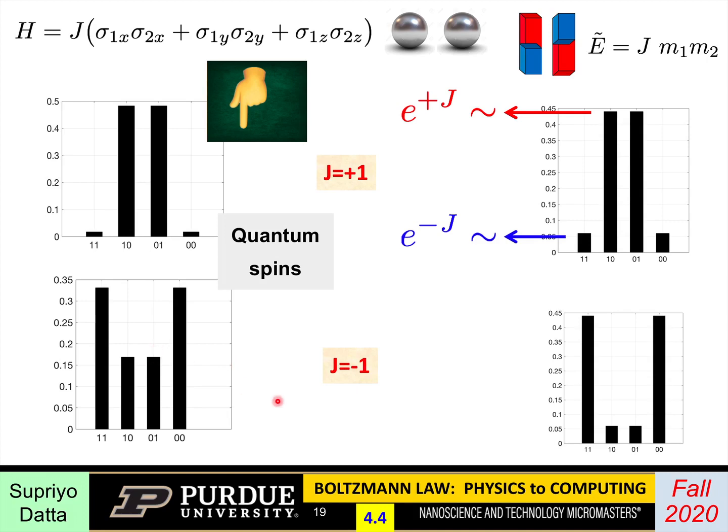And the other case, when J is negative, that's where it's very interesting. It doesn't matter how big you make J. You could make it minus 10. The thing is, 0,1 and 1,0 would never get suppressed beyond this factor of 2. It is always half of this. Whereas in the classical case, if J were negative, then 0,1 and 1,0 would gradually get suppressed exponentially as I increase J.